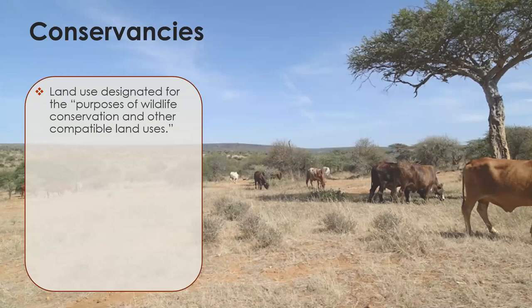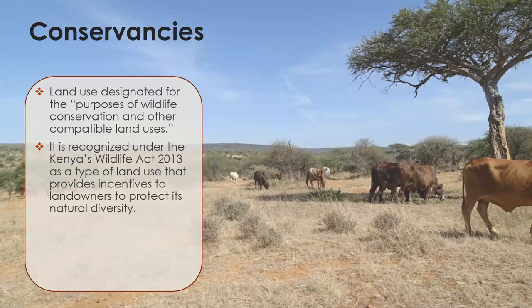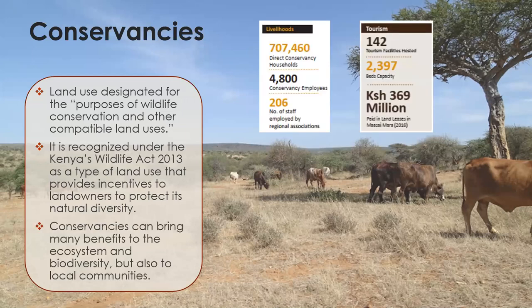These conservancies — privately owned or communal areas where wildlife integrates freely with livestock — have been designated for the purpose of compatible land use. The law in Kenya recognizes compatible uses, which in most cases is livestock and wildlife. In the Wildlife Act, this is recognized as a way of generating income. This is a single case of the Maasai Mara, where we have seen millions of Kenyan shillings paid to ranchers and land owners, employing huge numbers of people both locally and outside the areas.